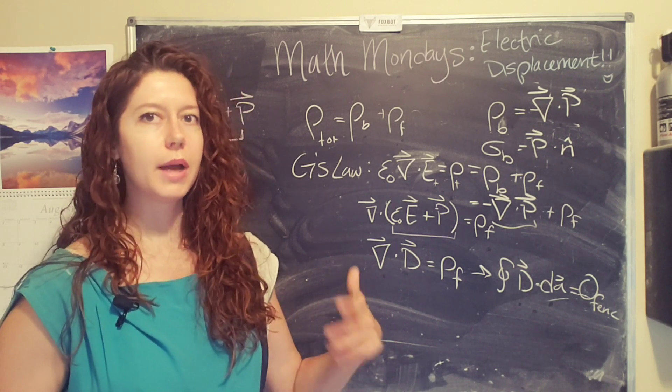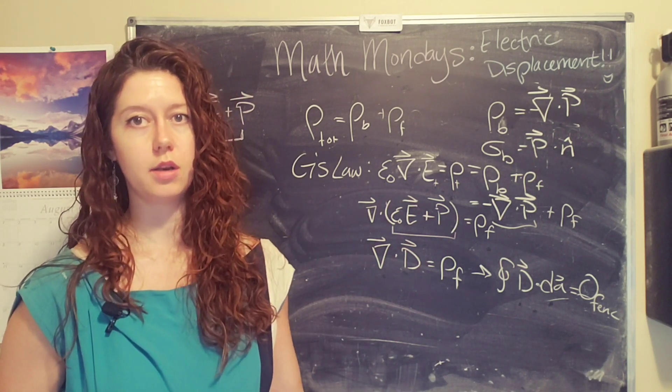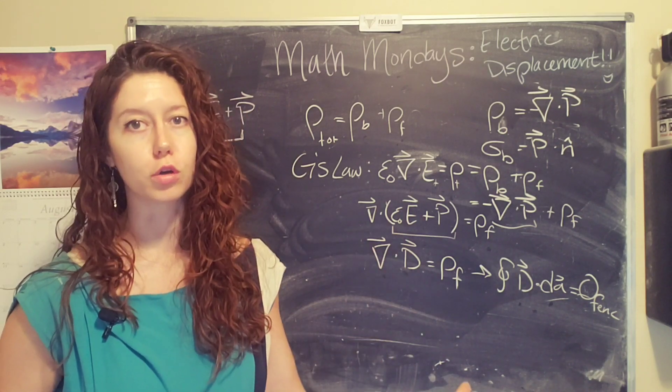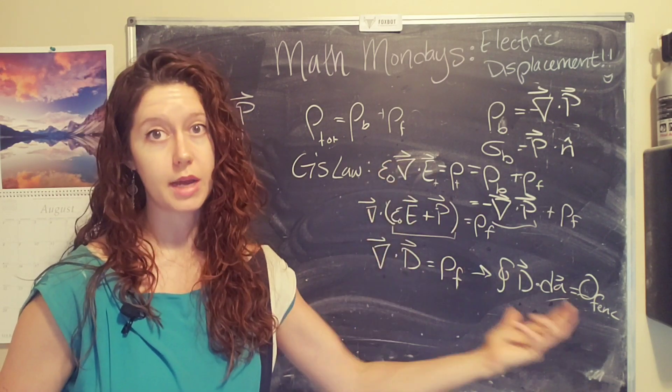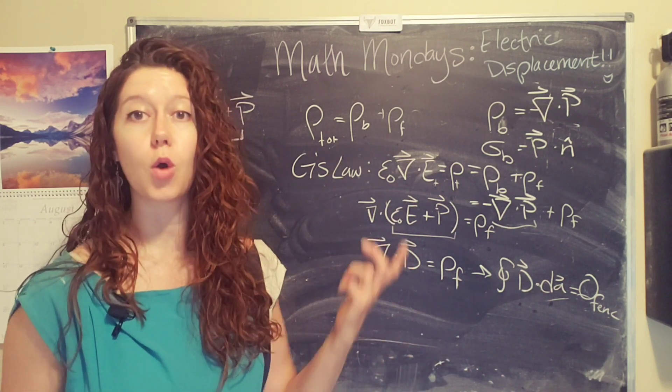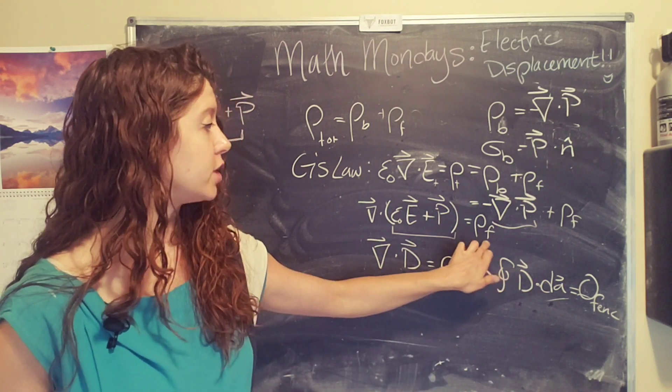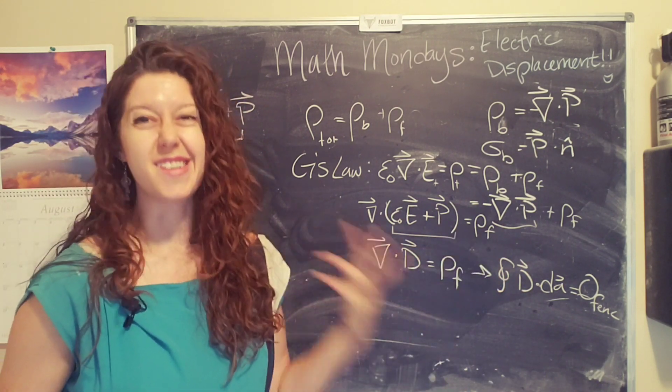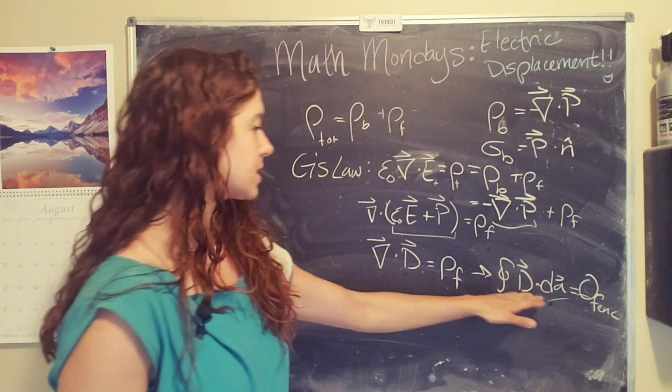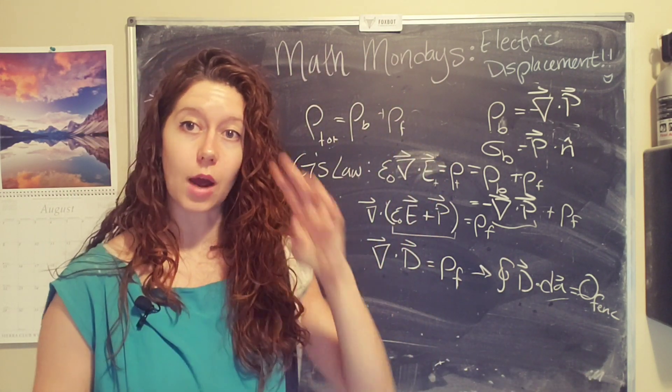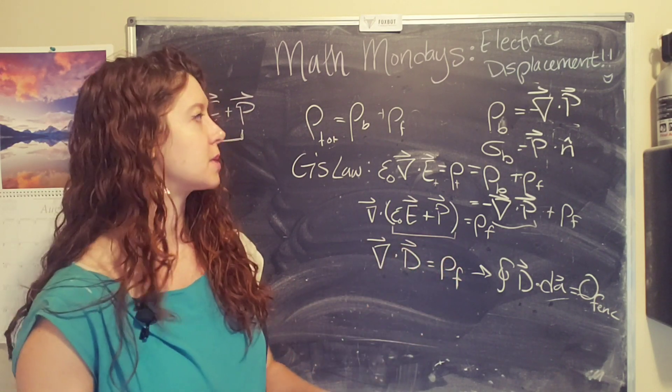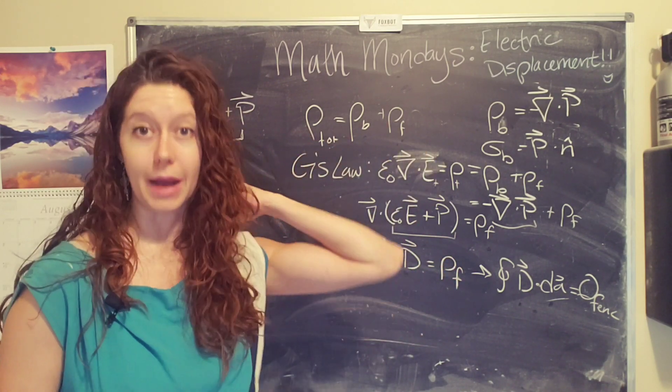So we know what that charge density is, or maybe we applied an electric field so we can kind of backtrack and figure that out. But it's the polarization that's really tricky initially because the polarization occurs due to the applied charges or the applied electric field. So we typically start out knowing the free charge density, but not knowing the bound charge density. And so this helps us to kind of suss out the two and solve the total problem and then get some information about the bound charges.